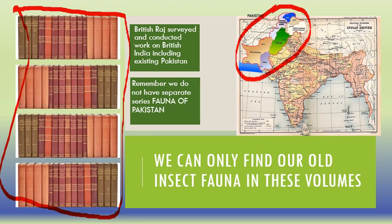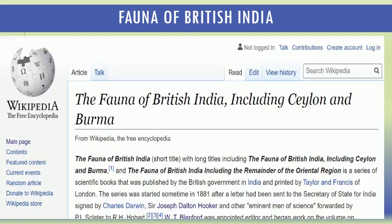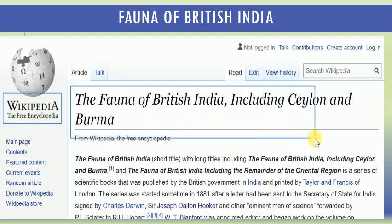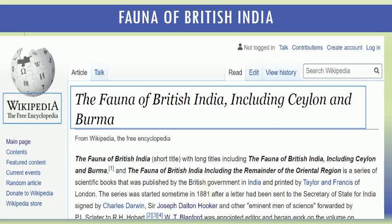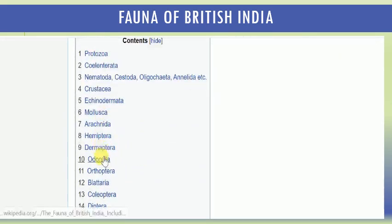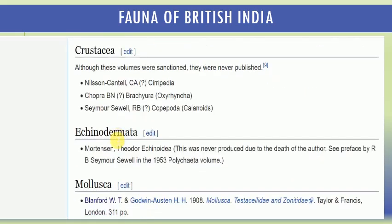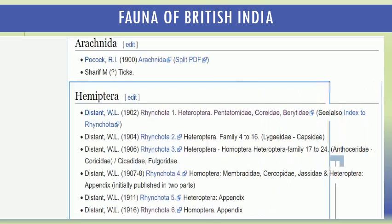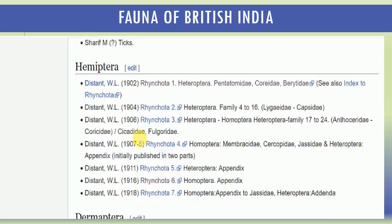If we need to know the insects of our country, we will have to go through these volumes and find out where our insects are described. Wikipedia is the best place to access the Fauna of British India including Ceylon and Burma — all details are available on that page. You can find all the volumes there, for example Hemiptera, Protozoa, Crustacea, Mollusca, and so on, along with external links.